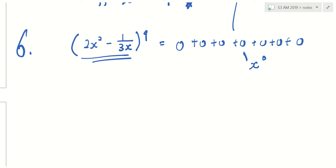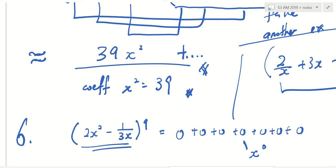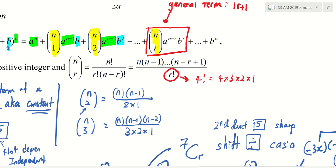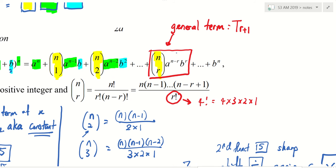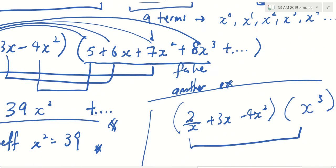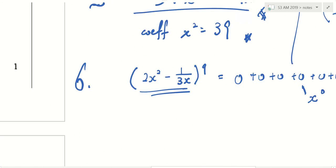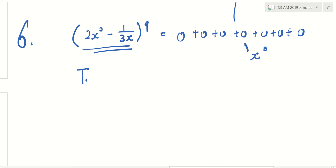So, therefore, I will use the general term formula. Can you look at the revision notes again? This thing here, term r plus 1 equals to this. I will copy this onto the below. So you may want to copy as well. Can you write down term r plus 1 equals to n choose r, a to the power of n minus r, sorry, b to the power of r.